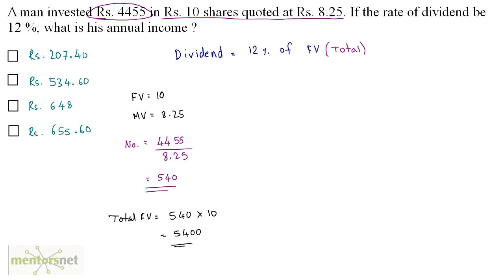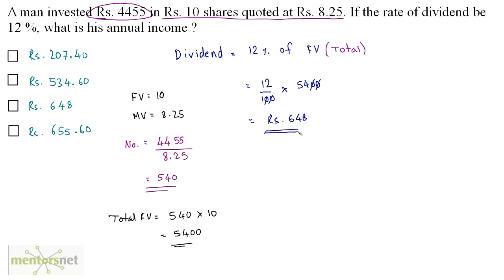Now we can calculate the income or dividend. It is 12% of the total face value: (12/100) × 5,400. Cancelling zeros, this gives 12 × 54 = 648. So the dividend is Rs 648, and that is option C.